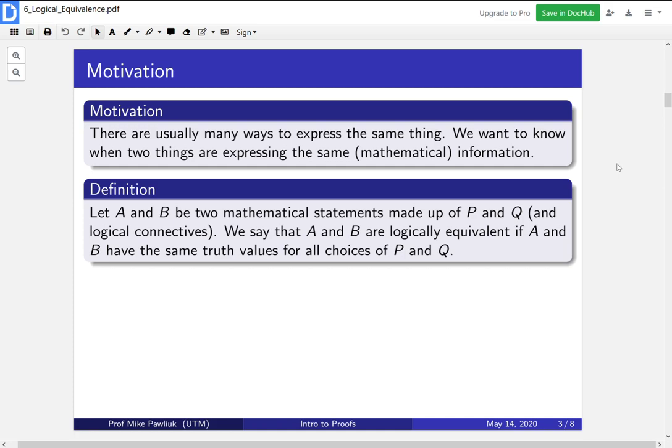Put another way, A and B might look a little bit different, some of them might have ANDs and ORs in weird places, but if they always have the same outputs, no matter what P's and Q's you put in, then that will say that A and B are logically equivalent.